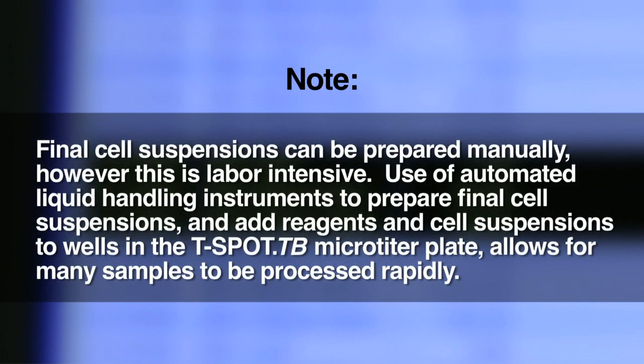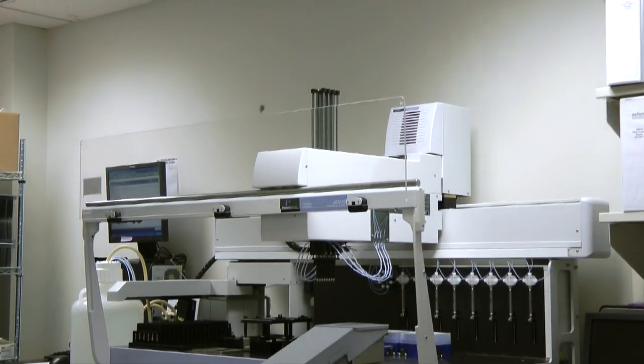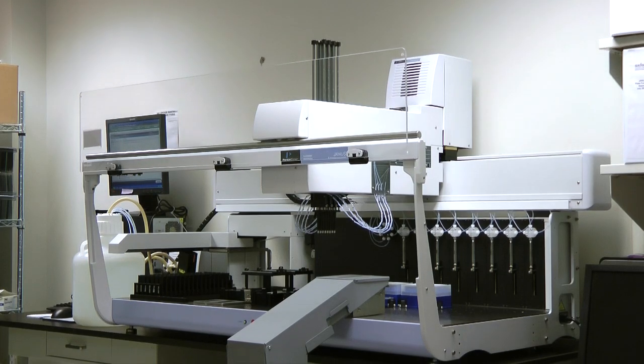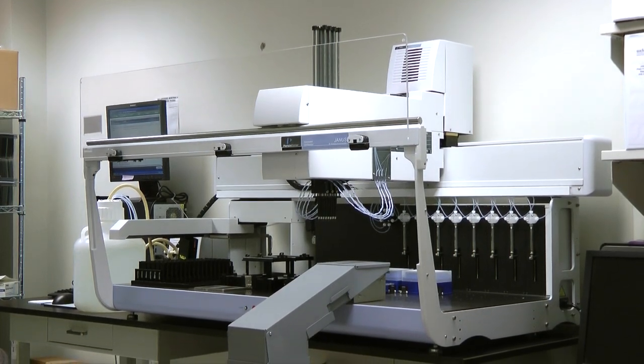Final cell suspensions can be prepared manually. However, this is labor-intensive. Use of automated liquid handling instruments to prepare final cell suspensions and add reagents and cell suspensions to wells in the T-spot TB microtiter plate allows for many samples to be processed rapidly. The Janus liquid handling system manufactured by Perkin Elmer is ideal for performing cell dilutions.